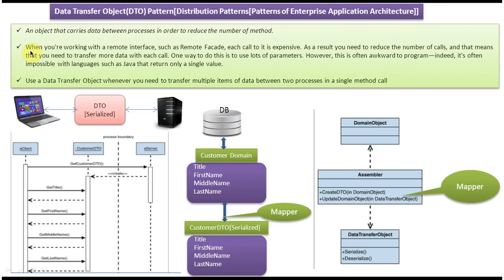When you are working with a remote interface such as a remote facade, each call to it is expensive. If the client is on one machine and the server is on another, making a call from client to server is a costly operation. In this case we can use the data transfer object to send more data to the server, reducing the number of calls.